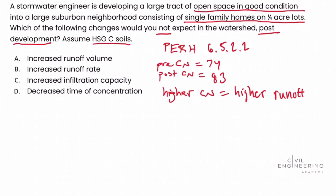Since a higher curve number equals higher runoff, looking at answer choice A — an increased runoff volume — that is something we would expect, as it's associated with higher runoff. They're asking for what we would not expect, so we can eliminate answer choice A.